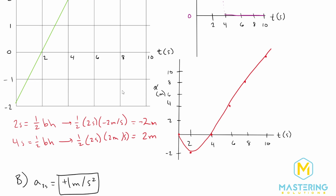In case they ask — looking at the graph we're going from a negative velocity to a positive velocity, so there is a turning point right at two seconds. You can see that from the position versus time graph: we're going backwards, then we turn and go in the positive direction.